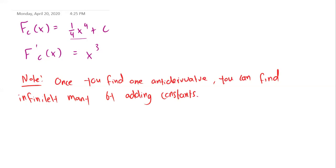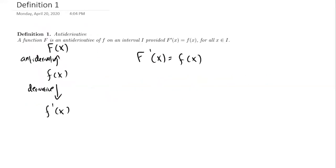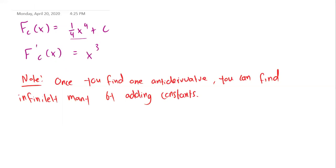That's a small introduction to how antiderivatives work. An antiderivative of a function little f is a function big F whose derivative equals little f — so we're going backwards instead of taking derivatives. The other key thing to note is that once you find one antiderivative, you can find infinitely many by just adding a constant, because the derivative of a constant is always zero.